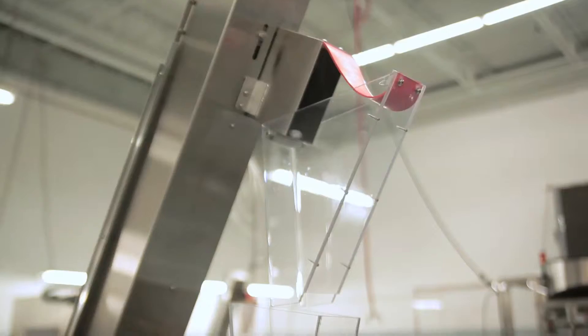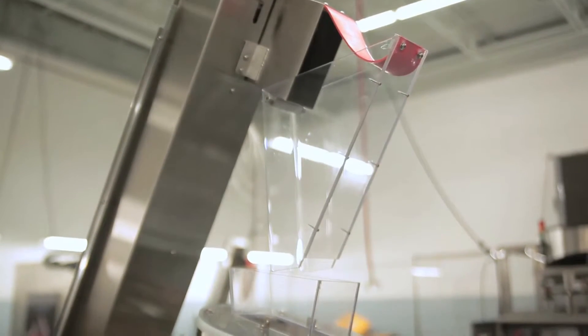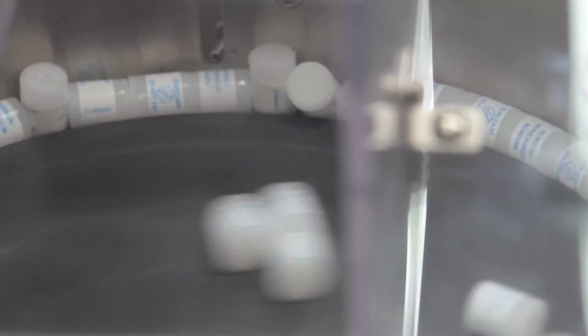Canisters are elevated and delivered into the canister feeder disc sorter to align them single file prior to exiting the vertical drop chute.